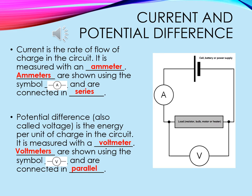Pause the video and fill in the gaps. A current is the rate of flow of charge in a circuit. It is measured with a something, and ammeters are shown using the symbol something, and are connected in what kind of circuit. The potential difference, also called voltage, is the electrical energy per unit of charge in the circuit. It's measured with something, and voltmeters are shown using the symbol something, and are connected in what type of circuit. Fill it in and then the answers will come up for you to mark your work.